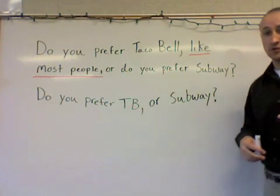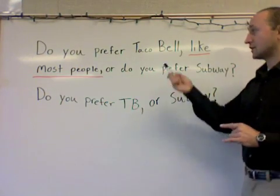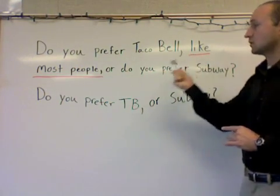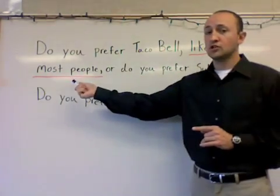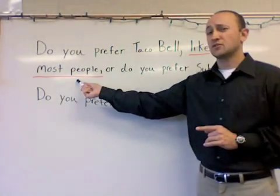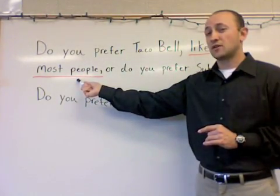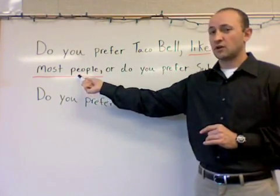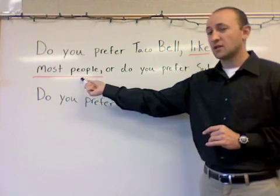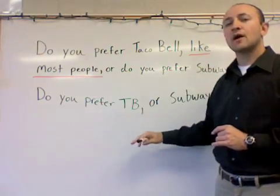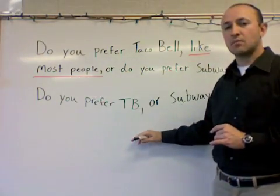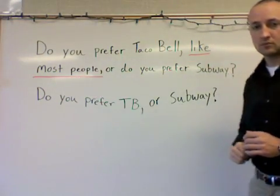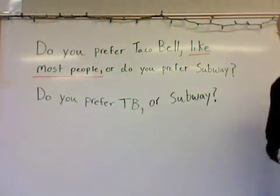So remember, there are two steps. The first step is to identify either the words or the part of the sentence that's trying to influence you and giving an unfair bias. Then the second step is to rewrite it by taking that part out.